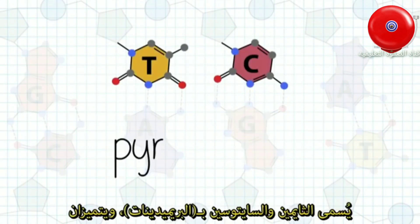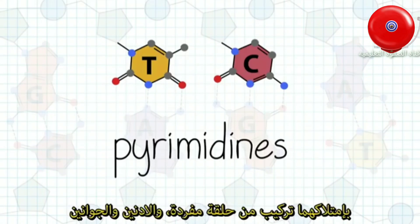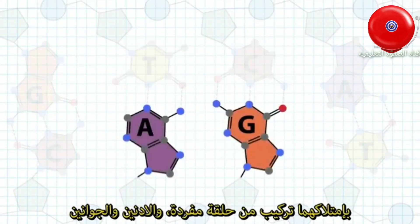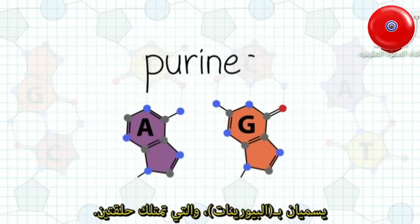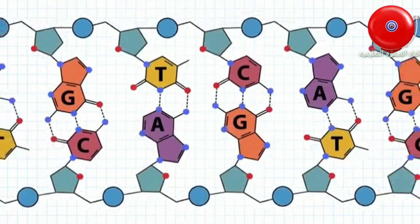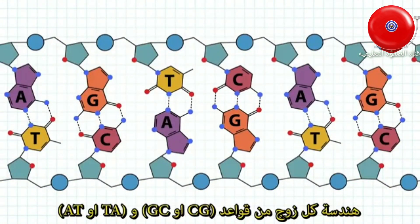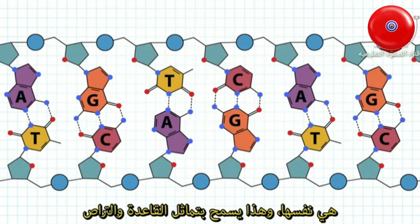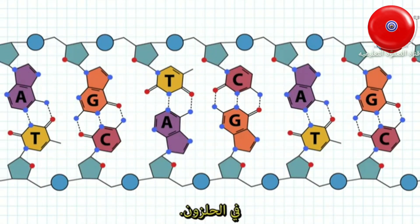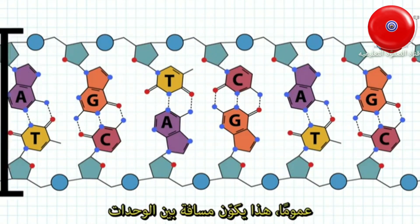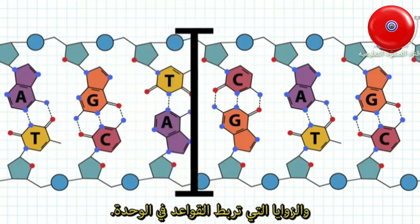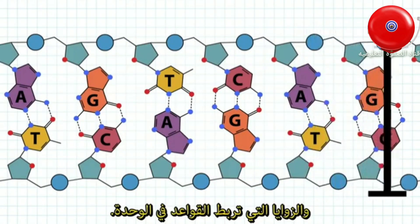Thymine and cytosine are called pyrimidines, characterized by their single ring structure, and adenine and guanine are called purines, which have double rings. The geometry of the AT or TA and GC or CG base pairs is the same, allowing for symmetry and base stacking in the helix. This mostly has to do with the distance between the backbones and the angles to which the base is attached to the backbone.